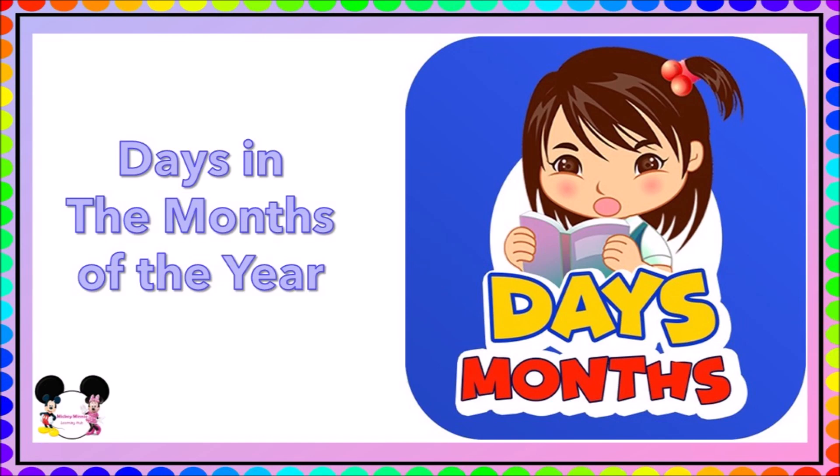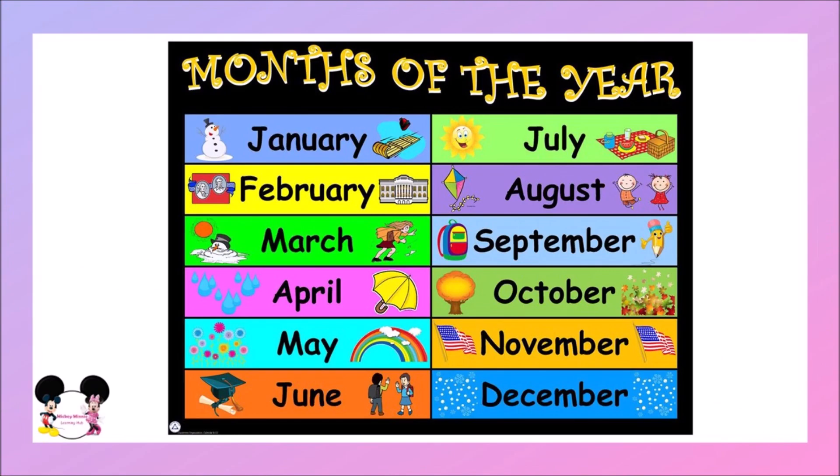The first month is January, February, March, April, May, June, July, August, September, October, November, and December. Now let's see how many days are there in each month of the year.